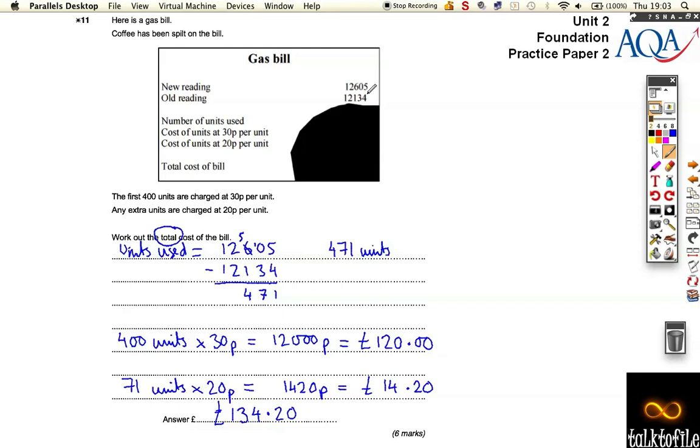So just to recap, we had to work out the units first, so how many units we used. Then once we worked out the units, we knew that 400 of those units were charged at 30p, and the remaining 71 units were charged at 20p. Added the answers up to get the total. Go back over it, and if you're not sure how to do these calculations, take a little bit longer than me if necessary. You've got plenty of time in the exam.